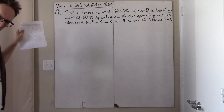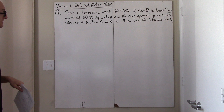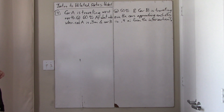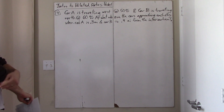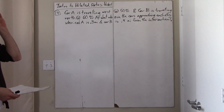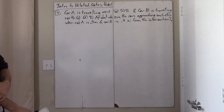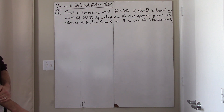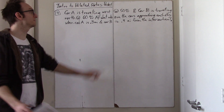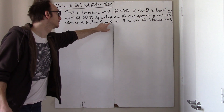Car A is traveling west — this is the problem, copied down from the packet. Car A is traveling west at 50 miles per hour, and car B is traveling north at 60 miles per hour. At what rate are the cars approaching each other when car A is three-tenths of a mile and car B is four-tenths of a mile from the intersection?